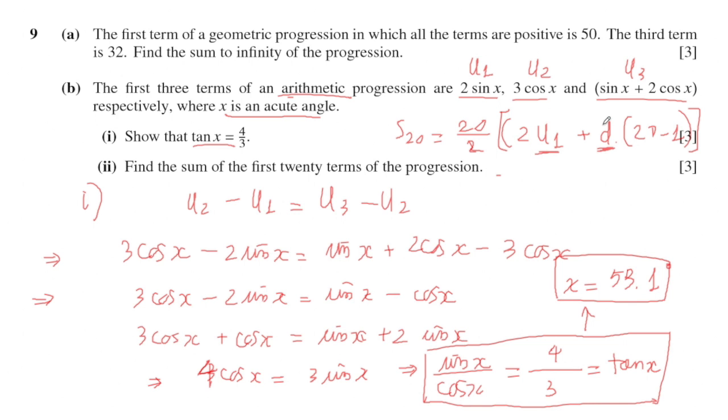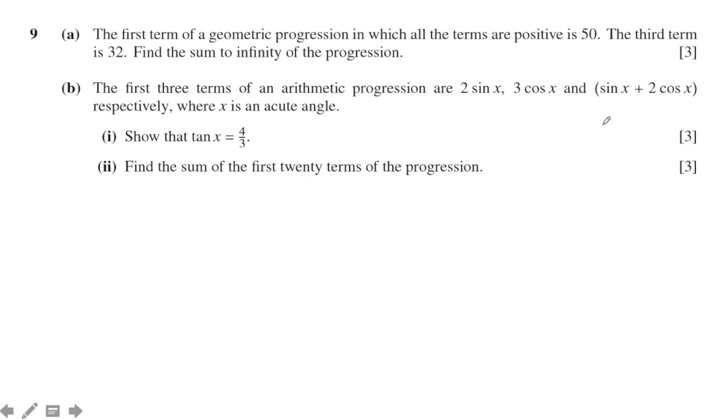Let's try. u₁ will be equal to 2 sin x. When you substitute x, you get 4 over 5. Next, u₂ equals 3 cos x. You got x is 53.1, so cos of 53.1 will be approximately 0.6 times 3, which equals 1.8.